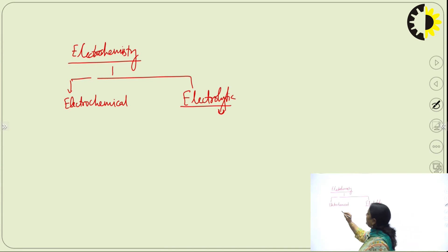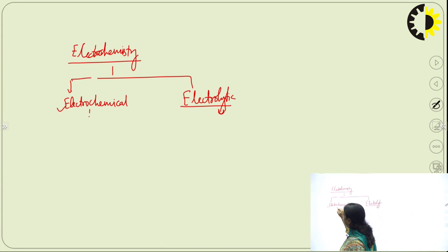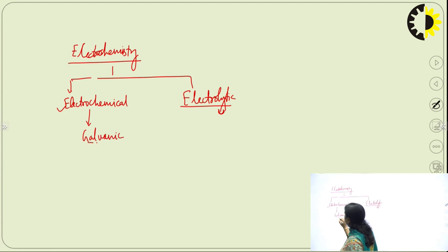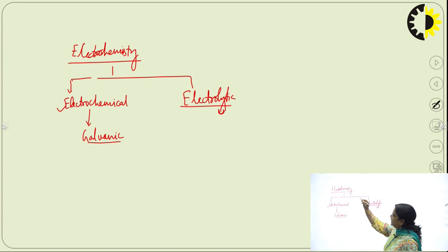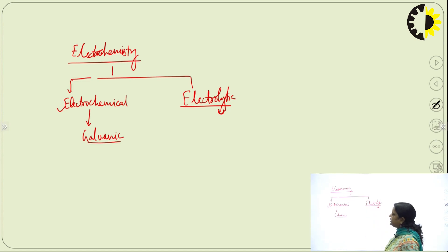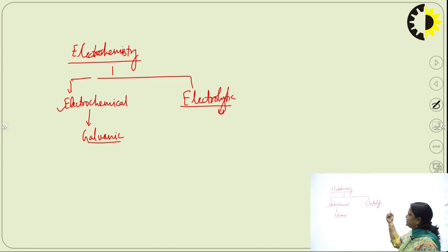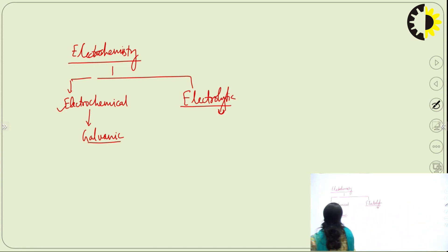In the electrochemical cell, the best example is the galvanic cell. The potential which is calculated in this equation is called electrode potential.